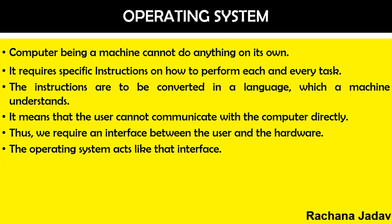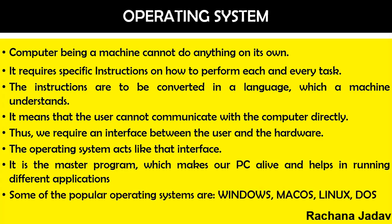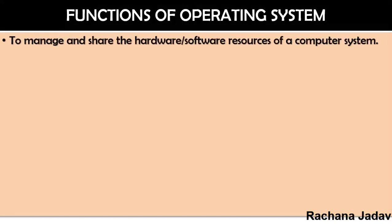The operating system acts as an interface — it communicates with both the computer and the user. It is called the master program because if you don't have an OS, the system has no heart. Just as a smartphone needs Android or any other mobile OS, a computer needs an operating system. Some popular operating systems are Windows, Mac OS, Linux, and DOS.